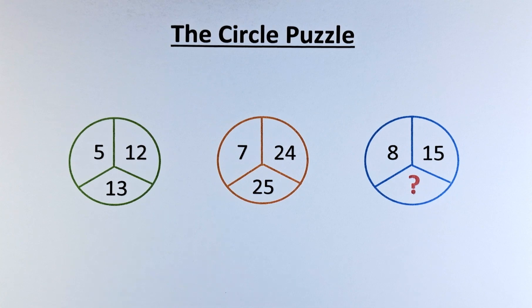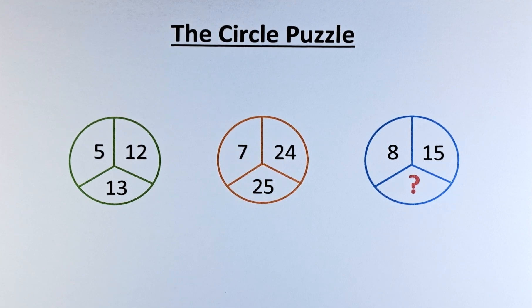So are you able to solve this puzzle? Let's try to do this together. Normally in this type of circle puzzle, we need to find how the number on the left, which is 5, and the number on the right, which is 12, give you the number at the bottom, which is 13.